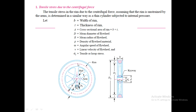We will be calculating the stresses acting on the outermost rim in order to design it. The dimensions for the different components are given here: d_o is the outer diameter, d_i is the inner diameter of the rim, and t is the thickness of the rim. There is also a provision for a key between the hub and the shaft.